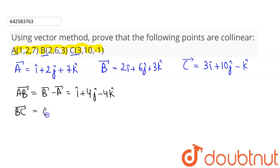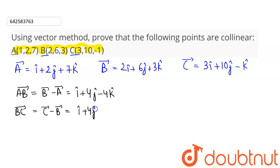BC vector will be position vector C minus position vector B. So 3 i cap minus 2 i cap is i cap, 10 j cap minus 6 j cap gives plus 4 j cap, and minus k cap minus 3 k cap gives minus 4 k cap.